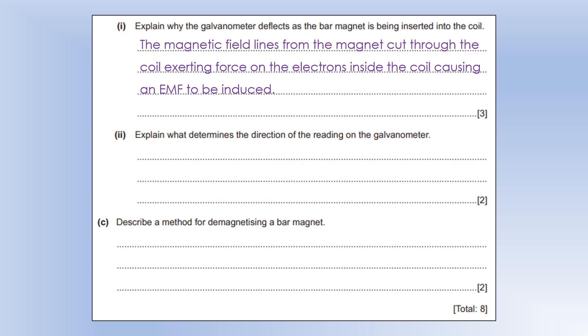Explain what determines the direction of the reading on the galvanometer. Well, EMF is induced to oppose the change that creates it, the change being the movement of the magnet. So, it's actually determined by the direction that the magnet is moving, and also the pole that is going in first.